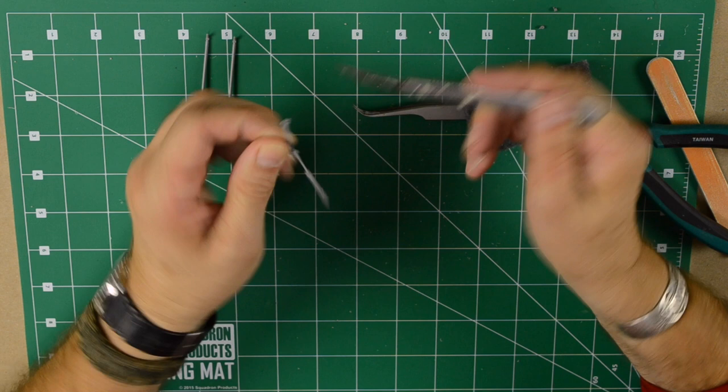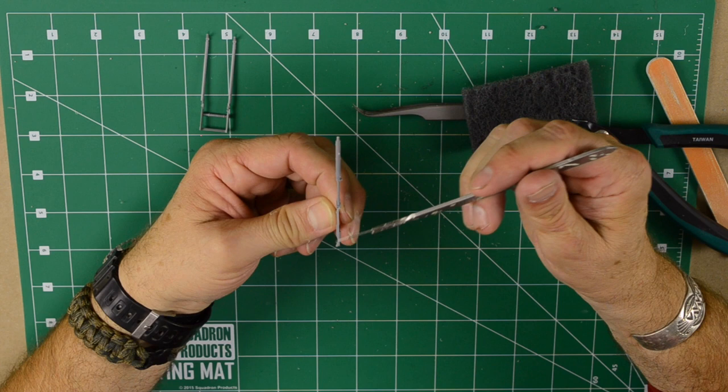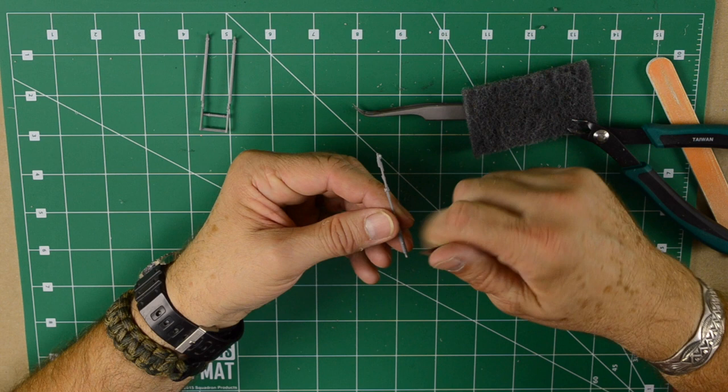Part J11 is a very complex part and very delicate. There is a faint seam line that crosses all over on both sides. Since this part is visible, you really need to take a lot of care in cleaning this up and make sure you don't break anything.